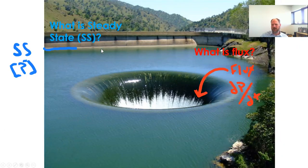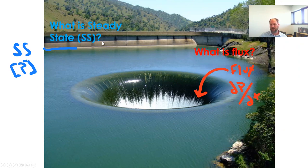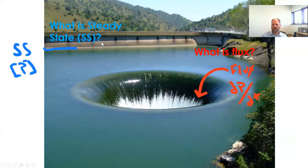Steady state equilibria occur when the flux in equals the flux out of a system. So in this case, if water is leaving the drain at the same rate that it's flowing into the reservoir, the height of the reservoir will never change — that's a steady state equilibrium. There's still a lot of water coming in and going out; it's just that when those two rates equal each other, it's in steady state equilibrium.